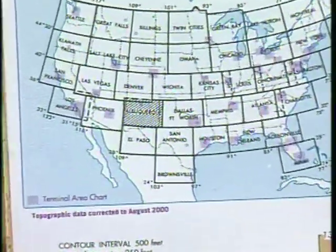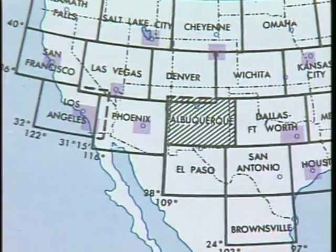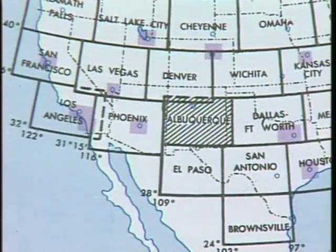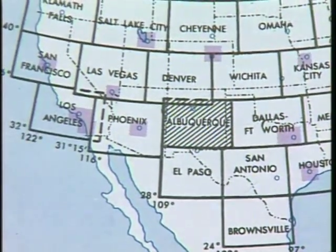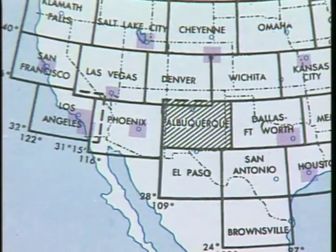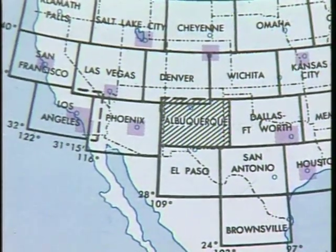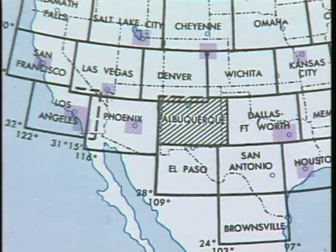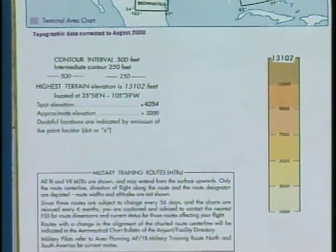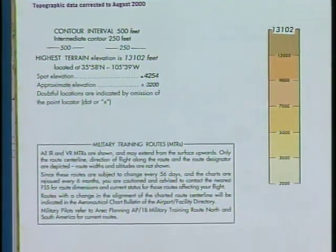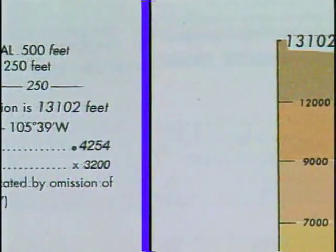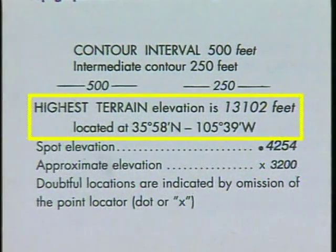The front panel of each sectional has a chart index, and the shaded block depicts the area covered by the chart. Sectionals are named for the major city that lies within the coverage area — for example, this is the Albuquerque sectional. Sectional charts show the locations where terminal area charts can be found by outlining the region with a magenta square. Below the chart index, you can find information on chart elevation. The color bar gives a graphic description of elevation changes, and the highest terrain elevation on the sectional is printed at the top of the color bar. Its geographic coordinates are also given.